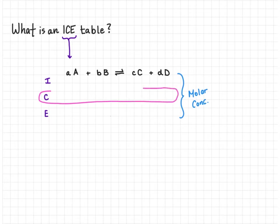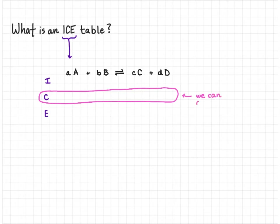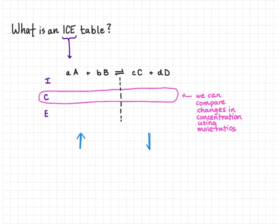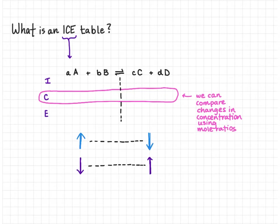In the change part, we can compare the change of all the various species by looking at the mole ratio of each species. If we draw a line from reactants to products, one important thing for our change is that if the concentration of reactants goes up, the change is positive, and the concentration of products will go down. If the concentration of reactants goes down — negative — the concentration of products will go up in a positive change.